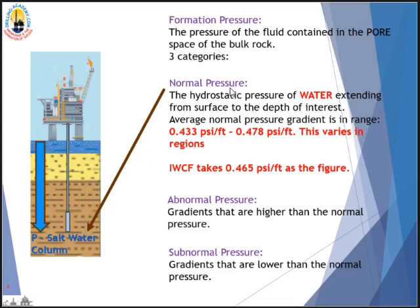The first category is normal pressure — the hydrostatic pressure of salt water standing all the way from surface to the depth of interest. The average normal pressure gradient for salt water ranges from 0.433 psi/ft to 0.478 psi/ft. For IWCF and IADC well control, the normal pressure gradient is taken as 0.465 psi/ft. Whatever is above the normal gradient is called abnormal pressure; whatever is below is called subnormal pressure.